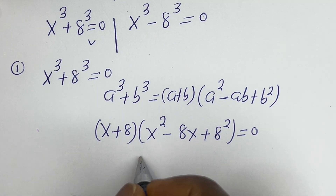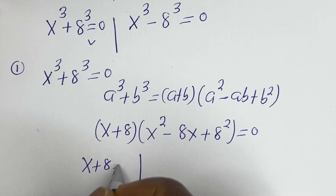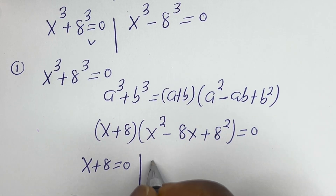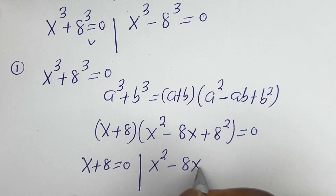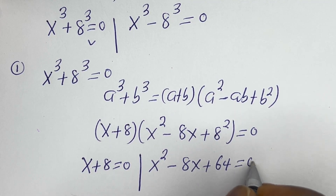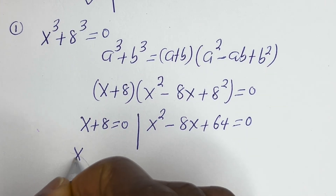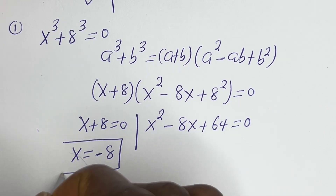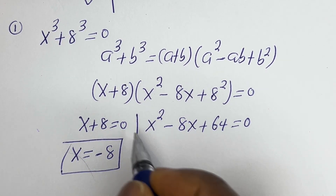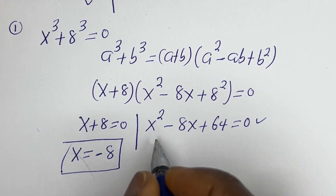There are two cases here. The first sub-case is s plus 8 is equal to 0, and the second sub-case is s squared minus 8s plus 64 is equal to 0. From the first sub-case, s is equal to minus 8. This is the first value of s. From the second sub-case, this is a quadratic equation — let's solve it using the quadratic formula.